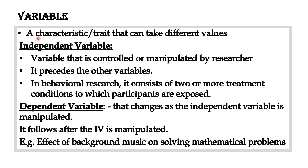Let us quickly understand the different types of variables involved in experimental research. What is a variable? A variable is a characteristic or trait that can take different values — any quantity, characteristic, or property that can change. This is called a variable.